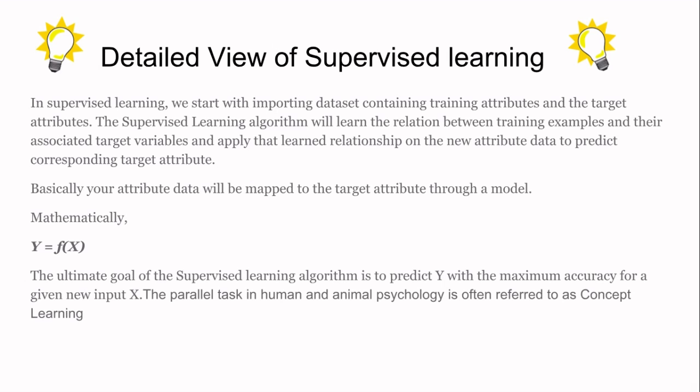In similar fashion for computers, we provide training attributes along with target attributes. This phase is known as training. In supervised learning, we provide a dataset in which we give training attributes as well as target attributes, such that each training example is associated with its target label. We then apply that learned relationship on new attribute data to predict the corresponding target attributes.